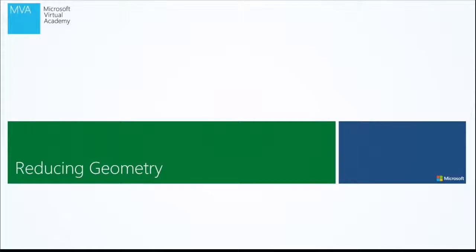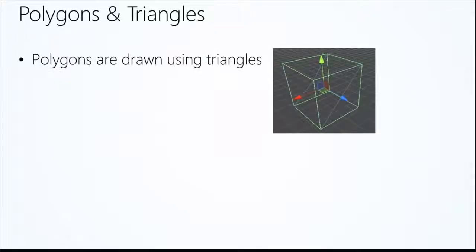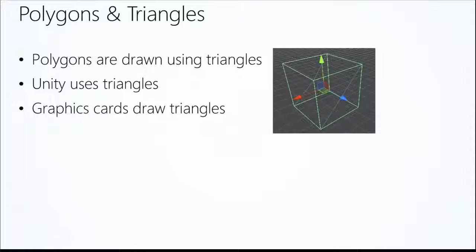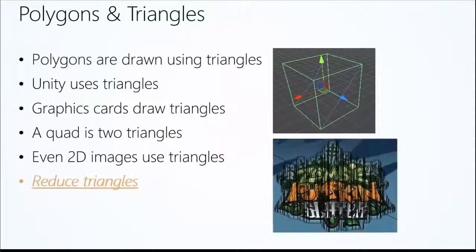Lastly, reducing geometry — some say one of the most important subjects along with reducing draw calls. Polygons and triangles in your game: polygons are actually drawn using triangles. Unity uses triangles, and your graphics card actually draws triangles. If we look at this cube on the right-hand side, its surface is actually two triangles — a quad is two triangles. Even 2D images use triangles. This is where the term 'tris' comes from when people ask about try count in your level — it's just a nickname for triangles.